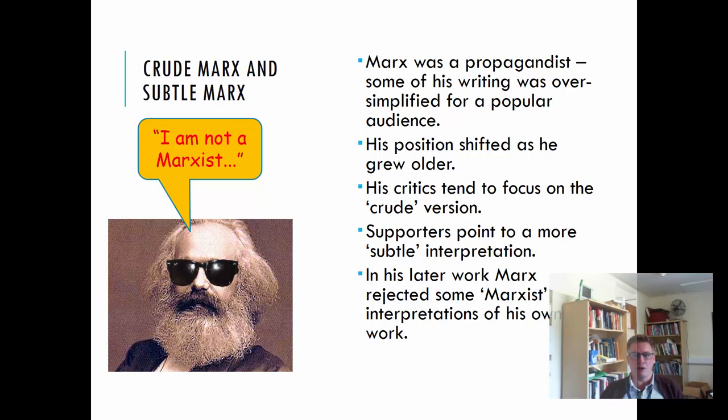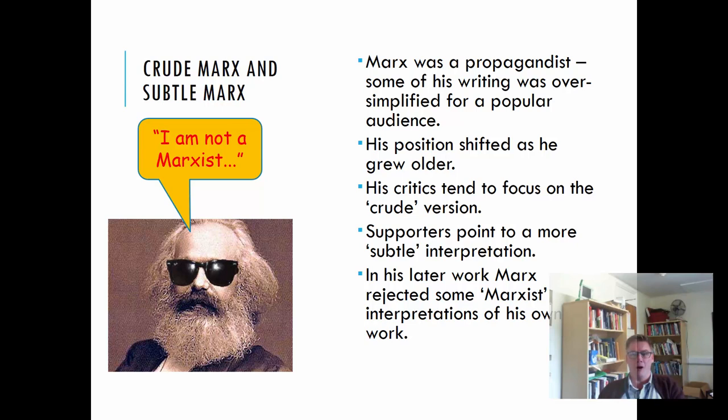His position gradually shifted as he got older. A lot of critiques tend to look at his early work and say that's the only version of Marx, but there is a much more subtle version that came out in his later work. In his later work he rejected some of the cruder Marxist interpretations of his early work. Whereas his earlier work led to socialist groups demanding certain things, he actually shifted away and developed a more sophisticated model in his later work of the 1860s and 1870s.